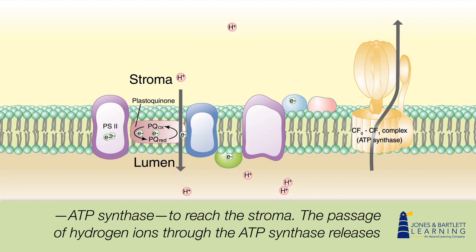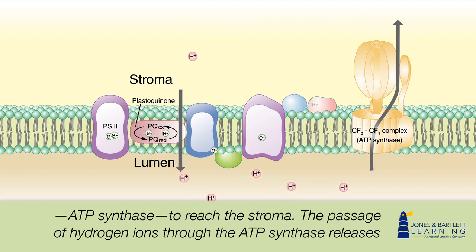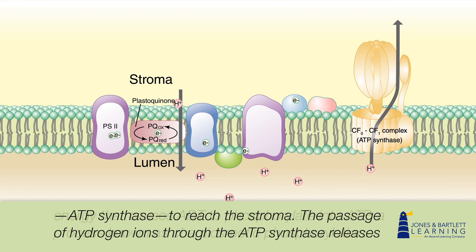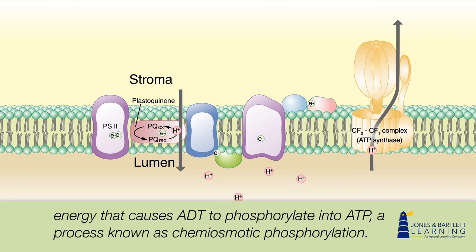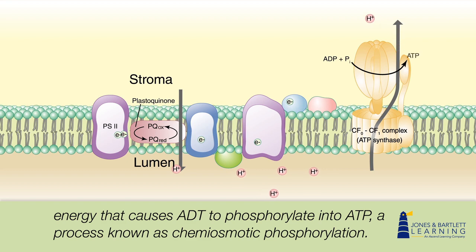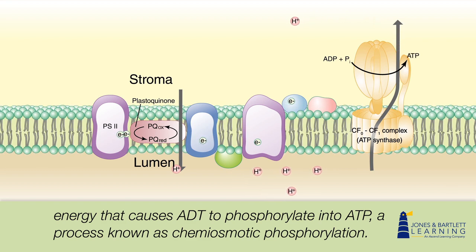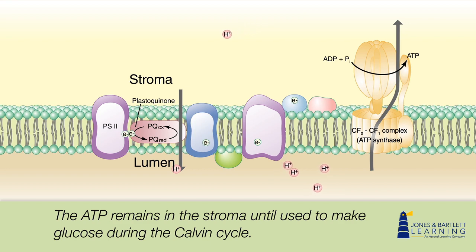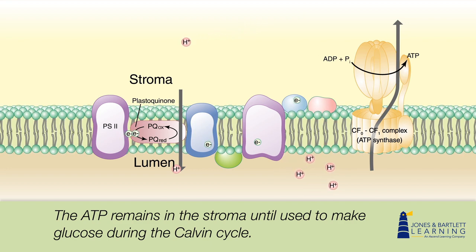The passage of hydrogen ions through the ATP synthase releases energy that causes ADP to phosphorylate into ATP, a process known as chemiosmotic phosphorylation. The ATP remains in the stroma until used to make glucose during the Calvin cycle.